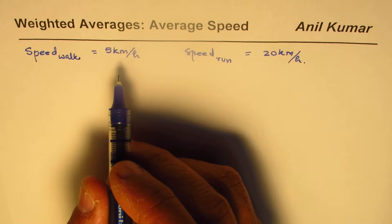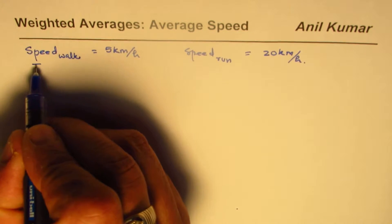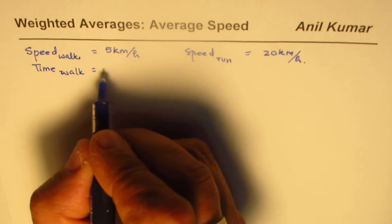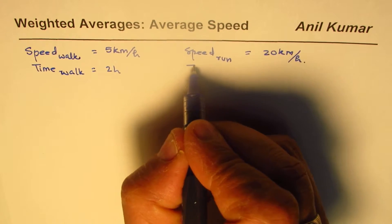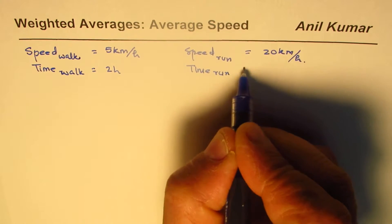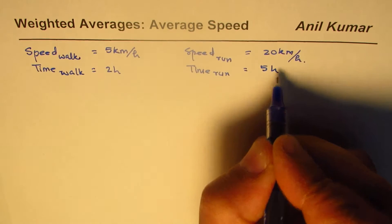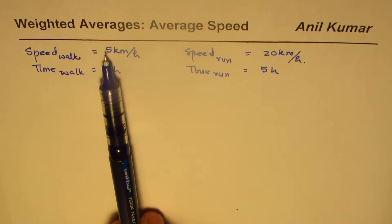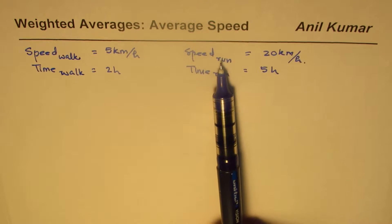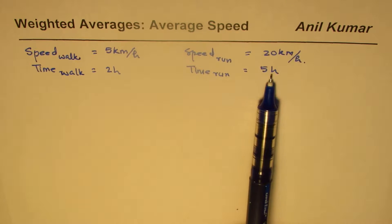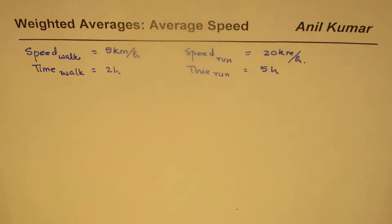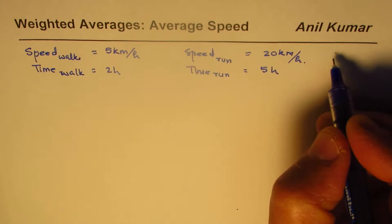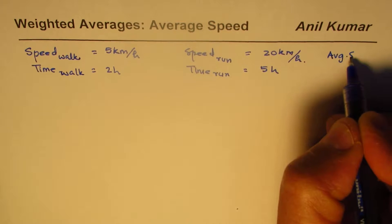Let us see that time to walk is two hours and time to run is five hours. So we are taking an example where a person walks for two hours at an average speed of five kilometers per hour and then runs for five hours at an average speed of 20 kilometers per hour. Now we need to find the overall average speed.